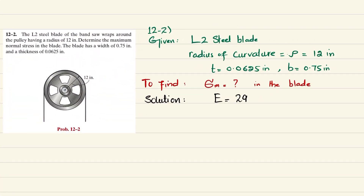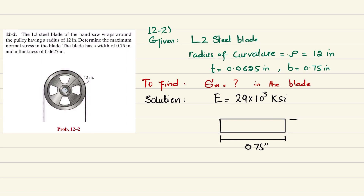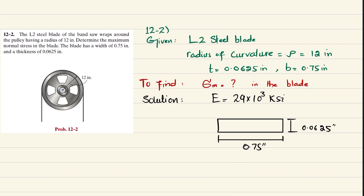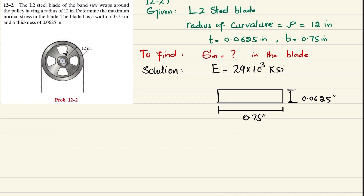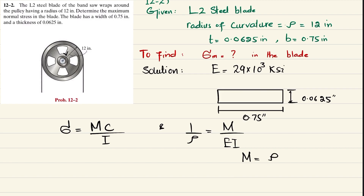The cross-section of the blade has a width of 0.75 inch and a thickness of 0.0625 inch. The blade is bent around the pulley. The bending stress formula is sigma equals M times c divided by I, and from the curvature relation 1 over rho equals M over EI, we get M equals EI divided by rho.